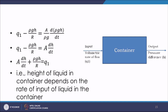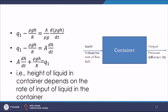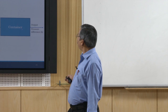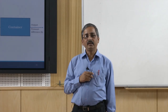Rearranging gives A·dH/dt + ρgH/R = Q1. This is a first-order differential equation that tells us how the liquid height H changes for a given input Q1. The right-hand side contains the input Q1, and the left-hand side describes the variation of H — the output pressure. This completes the model of the single hydraulic tank.